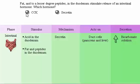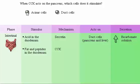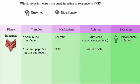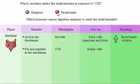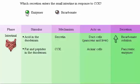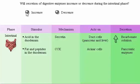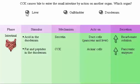Fat and to a lesser degree peptides in the duodenum stimulate release of CCK. When CCK acts on the pancreas, it stimulates acinar cells. Digestive enzymes enter the small intestine in response to CCK. CCK is the hormone that causes digestive enzymes to enter the small intestine, and secretion of digestive enzymes will increase during the intestinal phase.